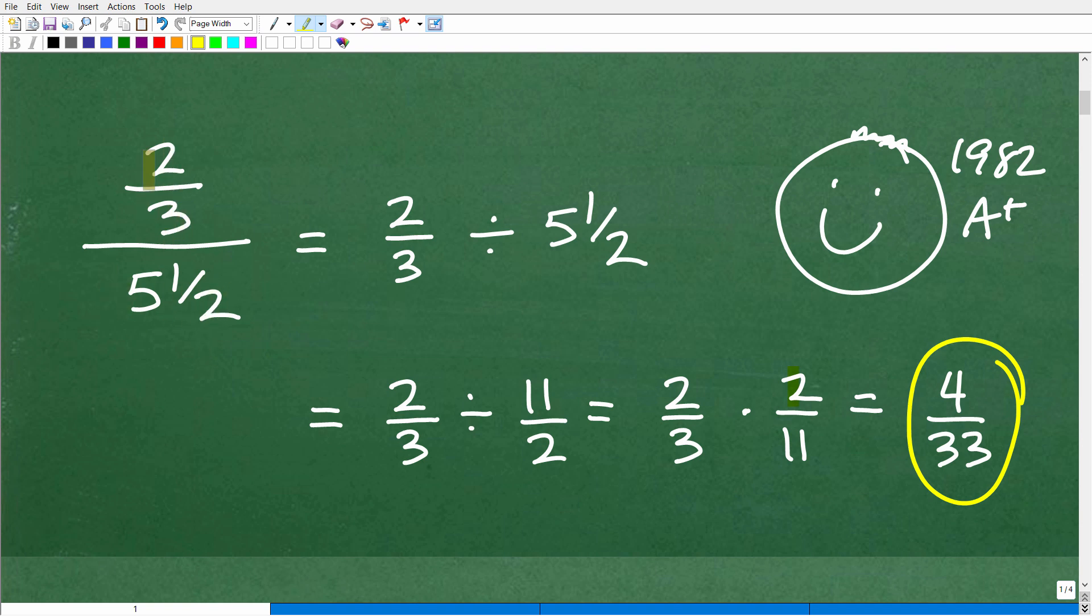So the first thing you need to do is rewrite this complex fraction in a better way where we can actually do this. So what we're going to do is say, okay, we have 2 thirds divided by 5 and 1 half. But instead of writing it this way, we're going to write it this way. We're going to say 2 thirds. Now this long fraction bar there really means division. So this is 2 thirds divided by, but I'm going to use this division operator, 5 and 1 half. So let's just make sure you understand that 2 thirds divided by 5 and 1 half is the same thing as this, 2 thirds divided by 5 and 1 half. But I want to go ahead and set this problem up this way. So now we're just dealing with a regular fraction problem that involves division.